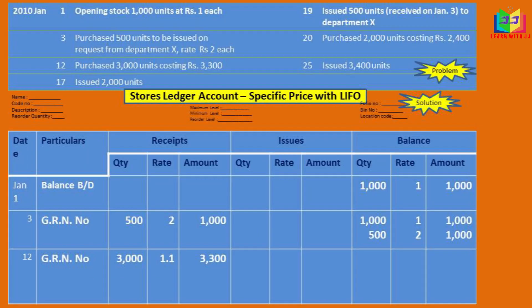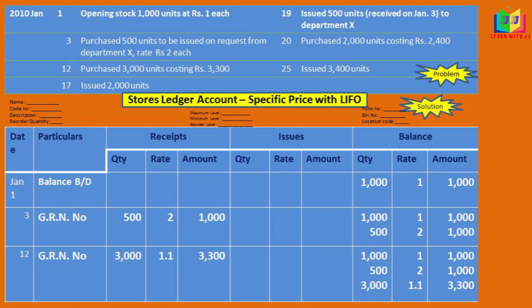Next, we have another purchase. The purchase units and the cost were given, so we have to write it in the amount column — that is 3300. We then have to find out the rate per unit: 3300 divided by 3000 gives 1.1. As usual, we will write it in the balance column under those 500 units, since it is a purchase.